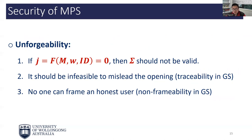Unforgeability captures several requirements. First, it should be infeasible to generate a valid signature with respect to a tuple M, W, ID which is not signable. Second, it should also be infeasible to misattribute the signature opening. And third, no one, even a coalition of corrupted group managers and a corrupted opening authority, can issue signatures on behalf of an honest user. The second and third requirements resemble the notions of full traceability and non-frameability in dynamic group signatures.